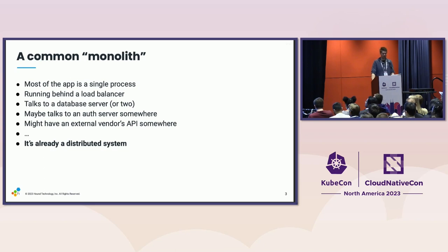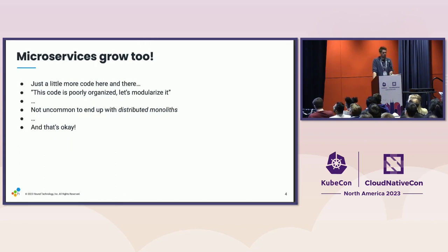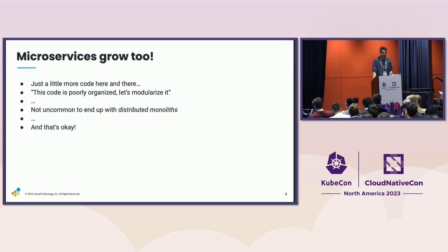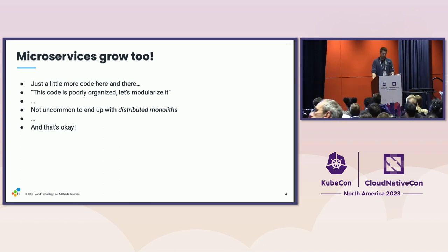It may not benefit as much as a system with thousands of services, but there's quite a bit of benefit to extract. Separately, microservices grow into monoliths themselves. It's pretty easy to keep adding code and eventually go, 'this code's kind of a mess, we should modularize this.' Before you know it, you end up with distributed monoliths because it's easier to modularize code inside an existing process than factor it out into its own separate system. This is just the natural evolution of a lot of systems.